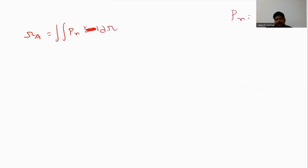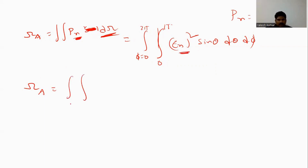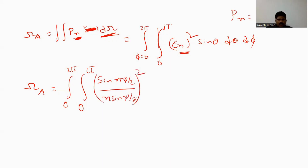So Ωa can be written as the double integral: φ from 0 to 2π, θ from 0 to π, of the normalized power expressed in terms of the electric field function. That is: the quantity [sin(Nψ/2) divided by (N·sin(ψ/2))] whole squared, times sine θ dθ dφ.